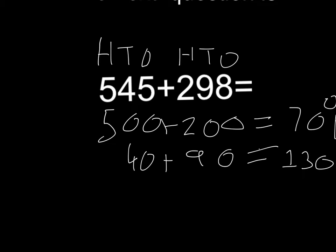And then you go 5 plus 8 equals 13. And then you plus 700 plus 130 plus 13 equals 843.